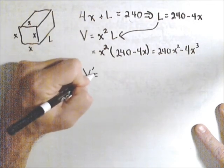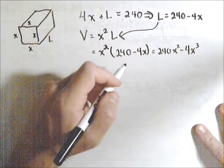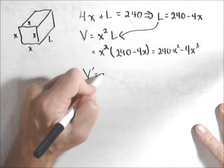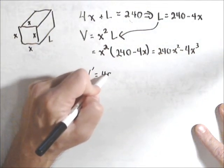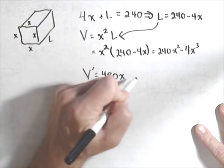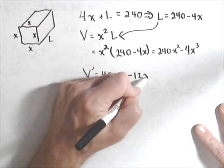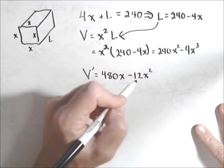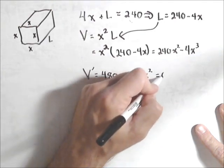What we're going to do is take its derivative and set it to zero. So, take the derivative, we have 480x, just have a couple of power rules, minus 12x squared. Like I said, we'll set that to zero.